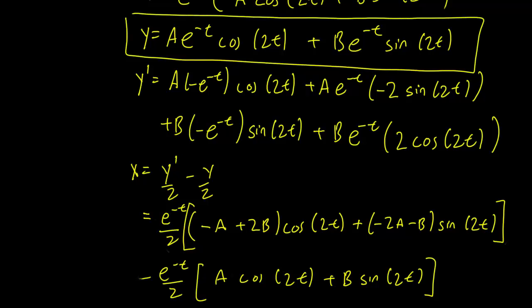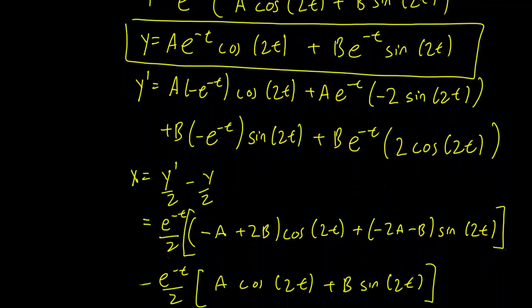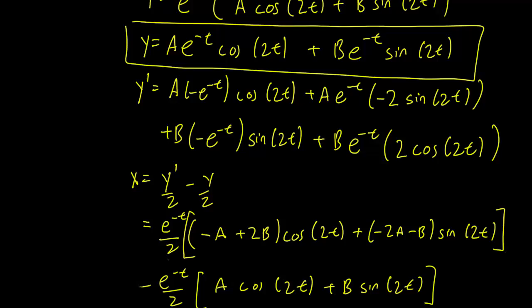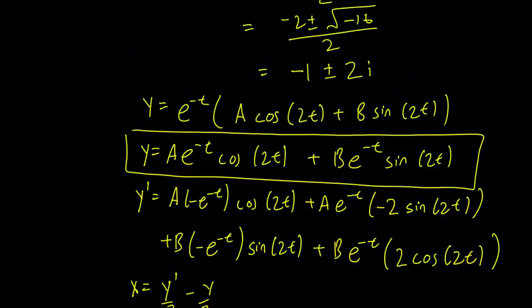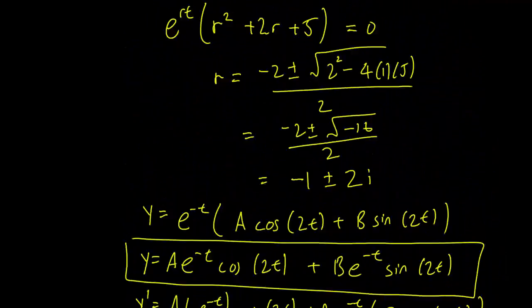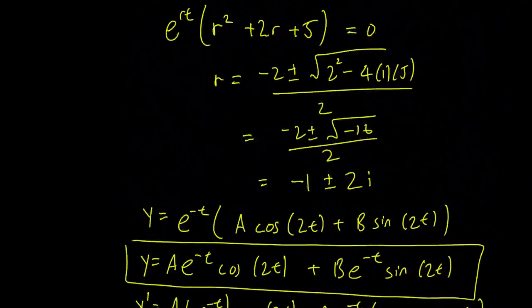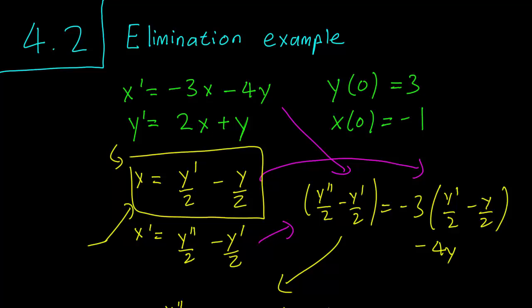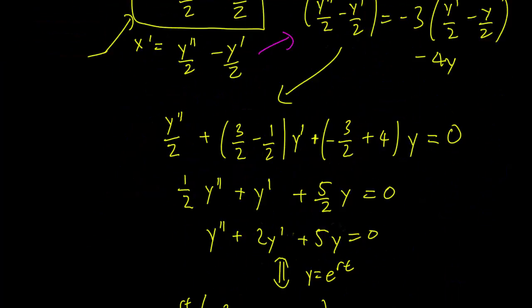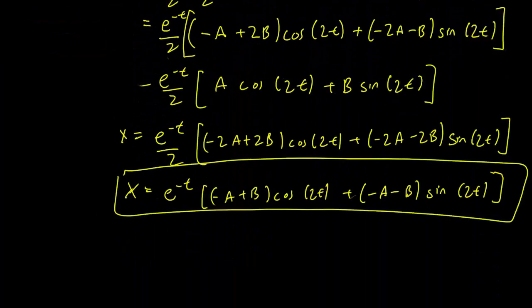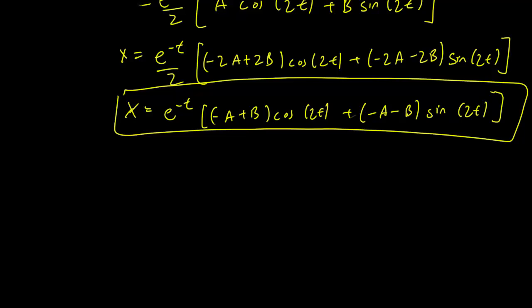All that remains is to plug in the initial conditions. At t equals 0, we have y equals 3 and x equals negative 1.